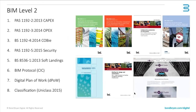In the UK, COBie is part of the BIM Level 2 mandate, or suite of documents that sit with the government mandate, which came into force in April of this year. COBie is covered by BS 1192 Part 4 and was released in 2014. It went straight to a British standard rather than becoming a publicly available specification, partly because it had been implemented elsewhere in the world beforehand.